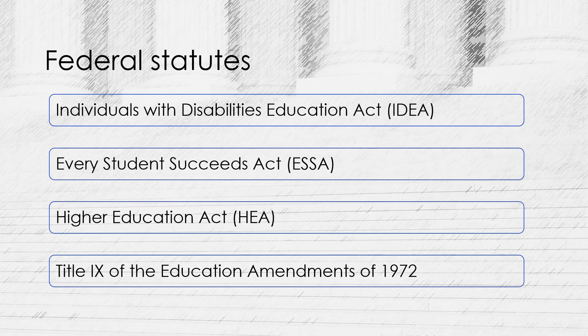The Individuals with Disabilities Education Act, IDEA, is a federal statute enacted in 1975 and reauthorized several times since then, that sets out requirements for the education of students with disabilities. The IDEA requires that students with disabilities be provided with a free and appropriate public education in the least restrictive environment possible, and that their education be tailored to their individual needs.